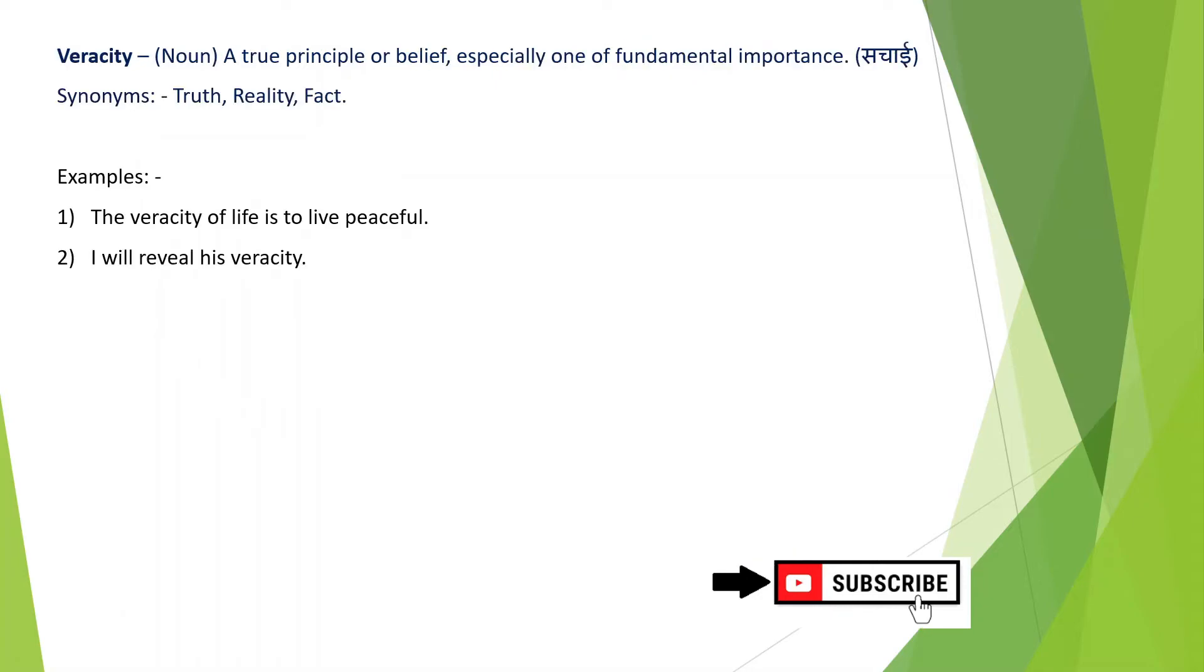Now I will move on to the next slide. Next word is veracity. Veracity is a noun. It has meaning in Hindi and in English: a true principle, especially one of fundamental importance. This means truth, reality, fact. Now with the help of examples, we will see how we can use this word in a sentence. Veracity of life is to live peacefully. I will reveal his veracity. I think this is clear for you.